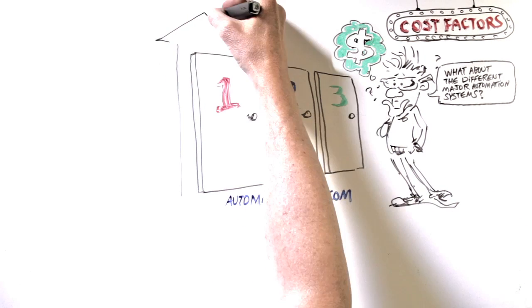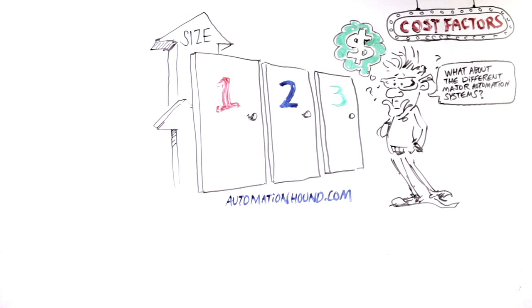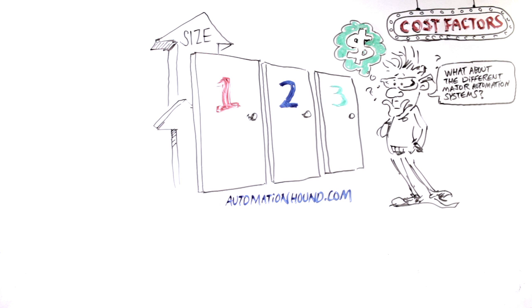First and foremost, the size of your system will have the greatest impact on the cost. The more controllable gadgets and control devices desired, the more the system will cost.